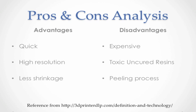For the disadvantages, DLP is expensive because the DMD mirror technology is a very intricate device containing millions of movable mirrors. Another disadvantage is that the resin material is toxic when uncured, similar to the SLA process — only when the resin is cured is it safe to handle. Additionally, the DLP process is usually top-down, so there is a peeling process involved, and if this peeling is not done correctly, it can cause defects in the printing process.